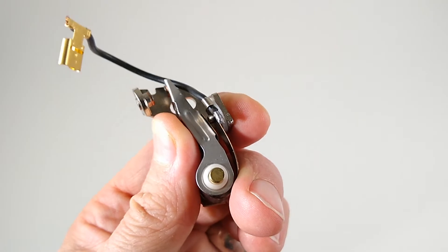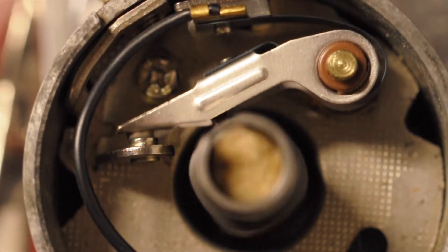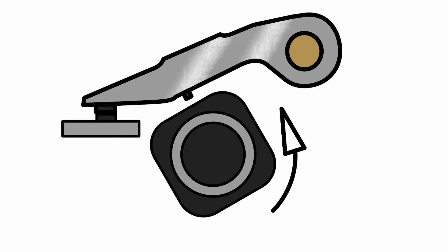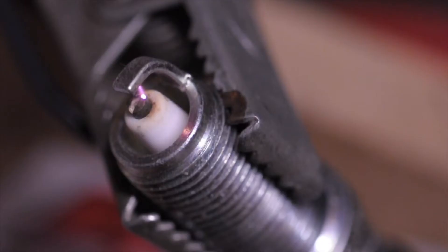The points are a mechanical switch which are opened and closed by a cam on the distributor shaft. When closed, the circuit is complete and the coil becomes energized. When the points open, the circuit breaks, causing the energy to be released from the coil, creating the spark.